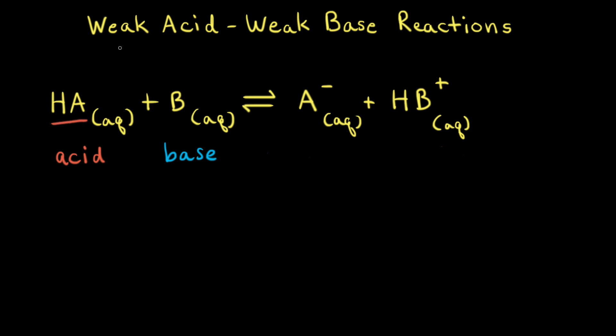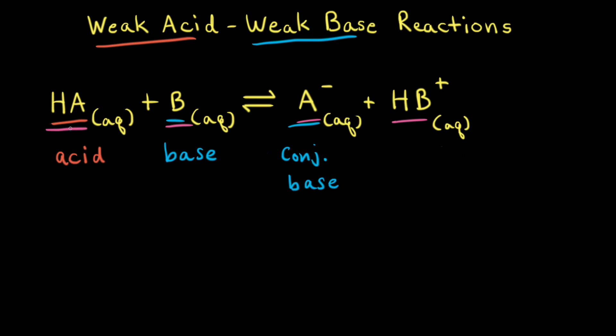Let's say that HA represents a generic weak acid and B represents a generic weak base. If our weak acid donates a proton to our weak base, that would form A⁻ and HB⁺. To identify conjugate acid-base pairs, remember there's only one proton or one H⁺ difference between an acid and its conjugate base. So when HA donates its proton and turns into A⁻, A⁻ must be the conjugate base to HA. There's one H⁺ difference between HA and A⁻, so they are a conjugate acid-base pair.